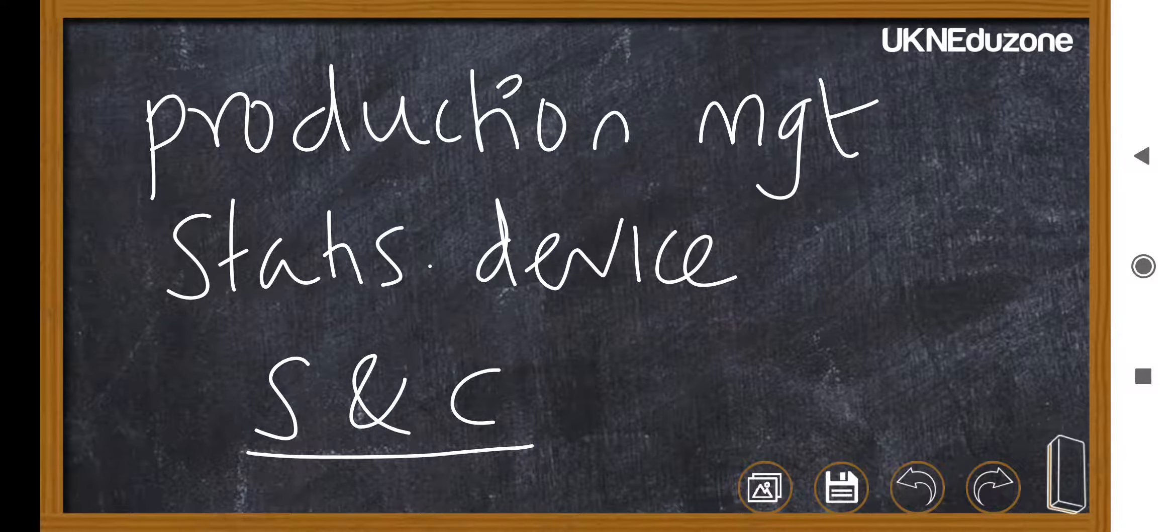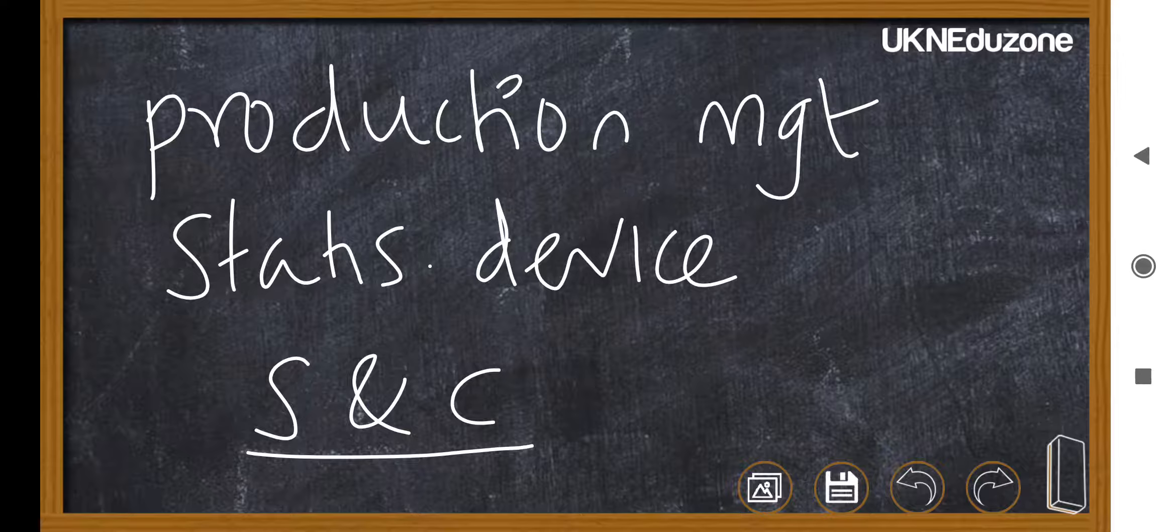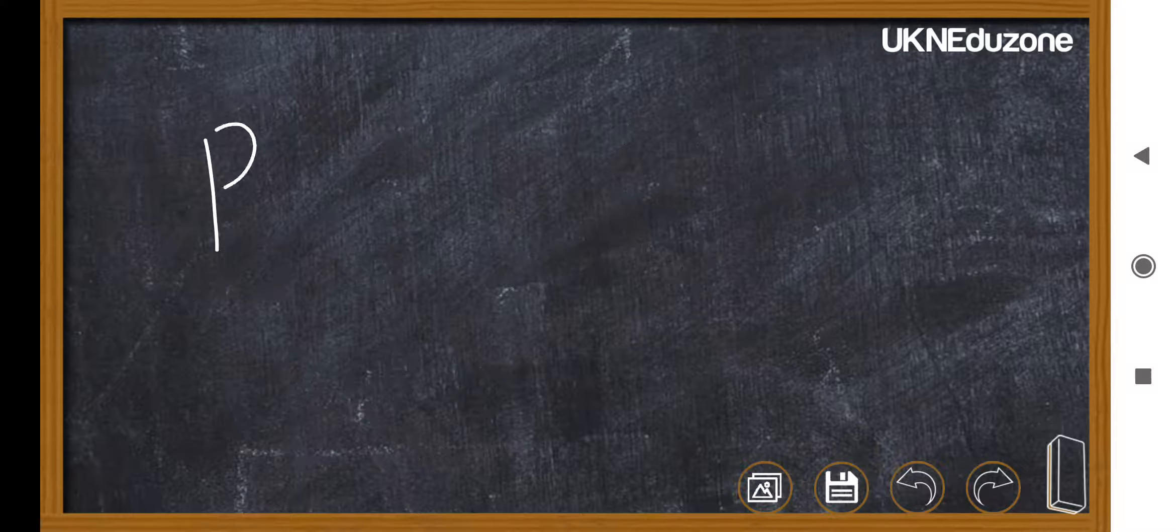Study and control the respective process is the main objective of preparing control chart. Process control is achieved through control chart. Process control is achieved with the help of control chart.